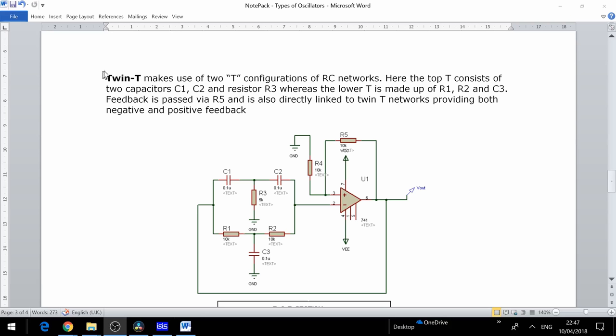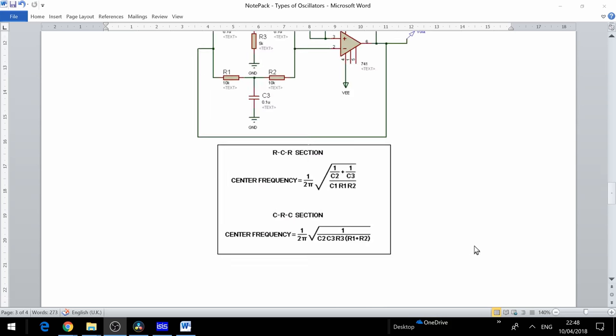In this final example we will look at the twin T oscillator circuit. The twin T makes use of two T configurations of RC networks. Here the top T consists of two capacitors C1, C2 and a resistor R3, whereas the lower T is made up of two resistors R1 and R2 and C3. Feedback is provided by R5 and is also linked directly to the twin T network providing both negative and positive feedback.